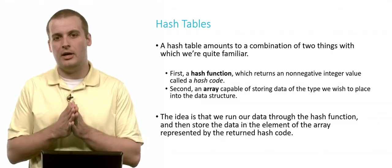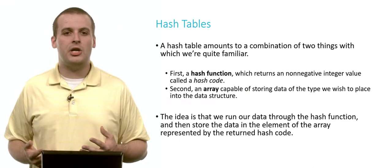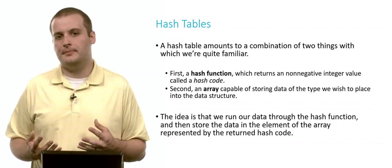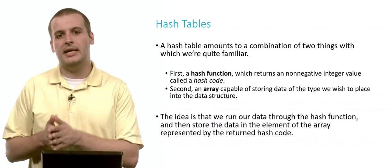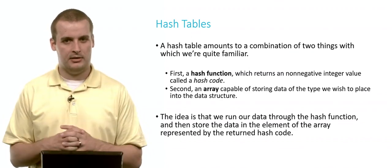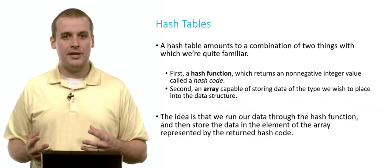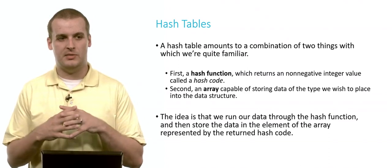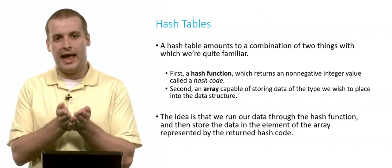So a hash table is a combination of two distinct pieces with which we're familiar. The first is a function, which we usually call a hash function. And that hash function is going to return some non-negative integer, which we usually call a hash code. The second piece is an array, which is capable of storing data of the type we want to place into the data structure. The basic idea is we take some data. We run that data through the hash function. And so the data is processed and it spits out a number. And then with that number, we just store the data we want to store in the array at that location.